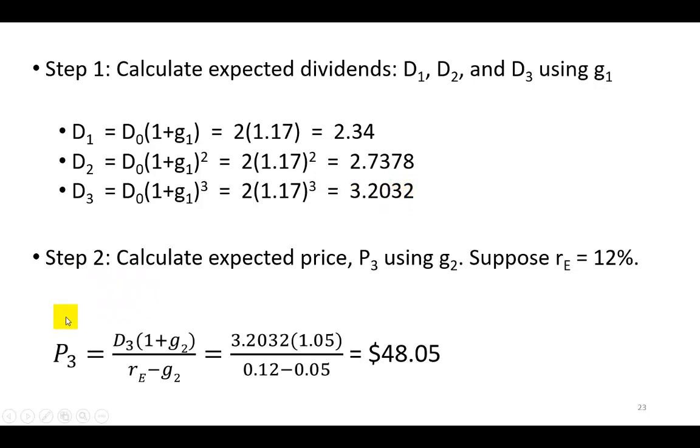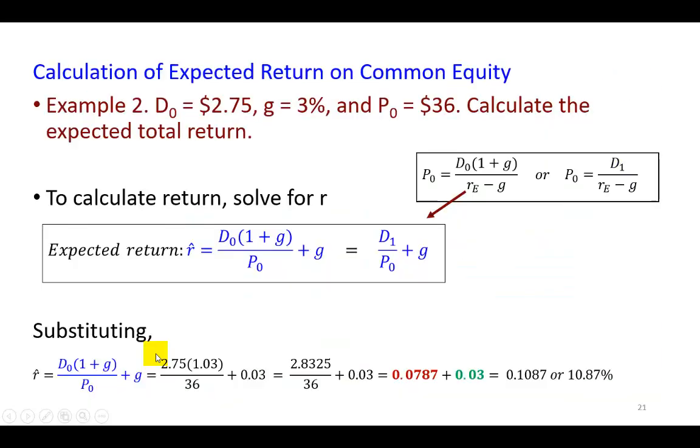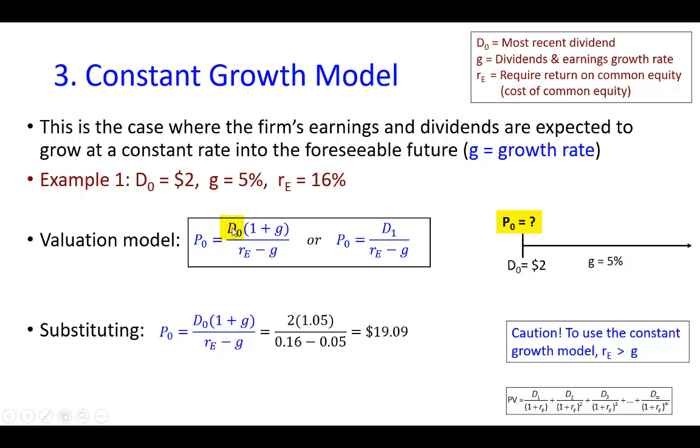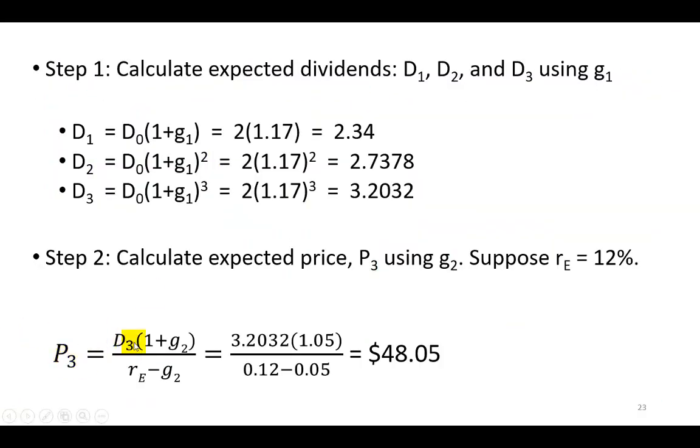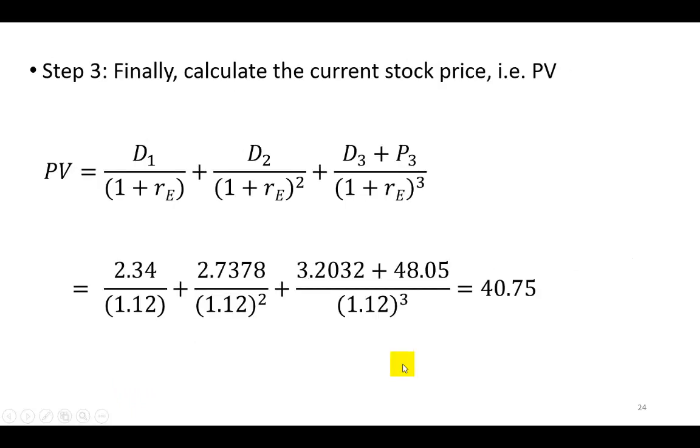And then, in step number two, we estimate the price of the stock three years from today, using the constant growth model. Bear in mind, if I go back a quick bit, observe that to calculate P sub zero, we need D sub zero right up here, which we then grow at the rate of G. Therefore, for us to get P3, we need D3 right here, and grow it at the constant rate of G. And then, the denominator is the same. So, this is at D3, which you see right here, growing at the constant rate of 5%. And then, we divide by the difference between cost of equity, which is a required rate of return on equity, and the growth rate to get P3 to be 48.05. And then, we'll put it all together right here, and find the present value of the stock to be $40.75.